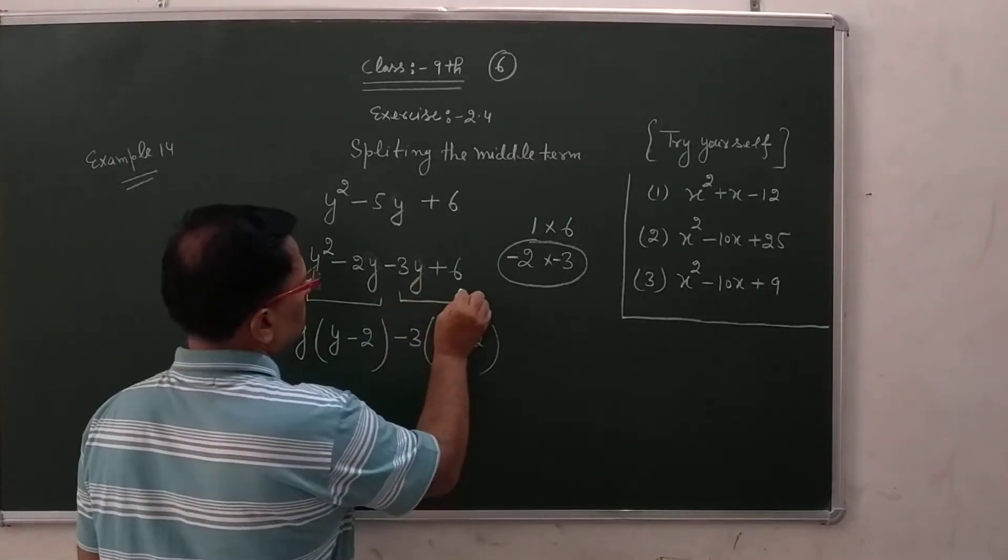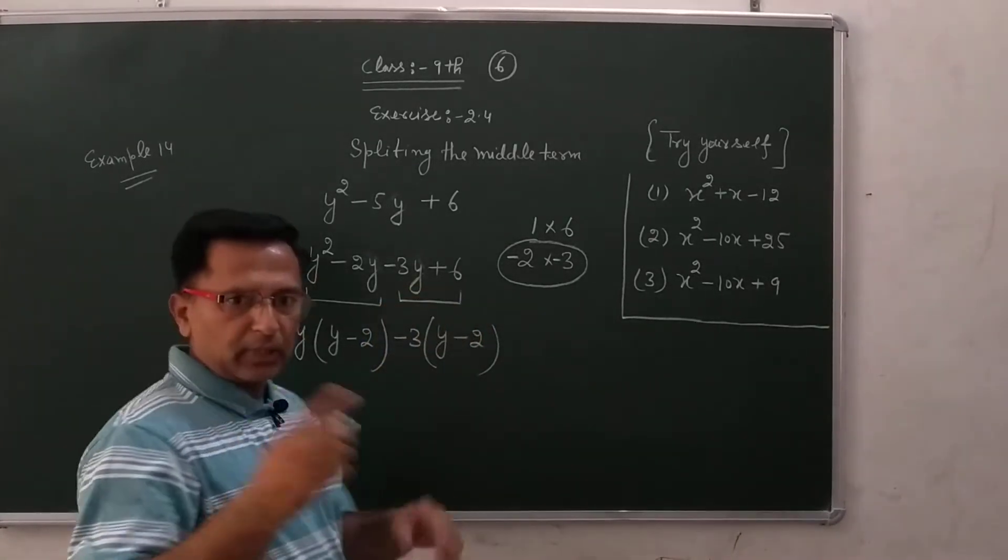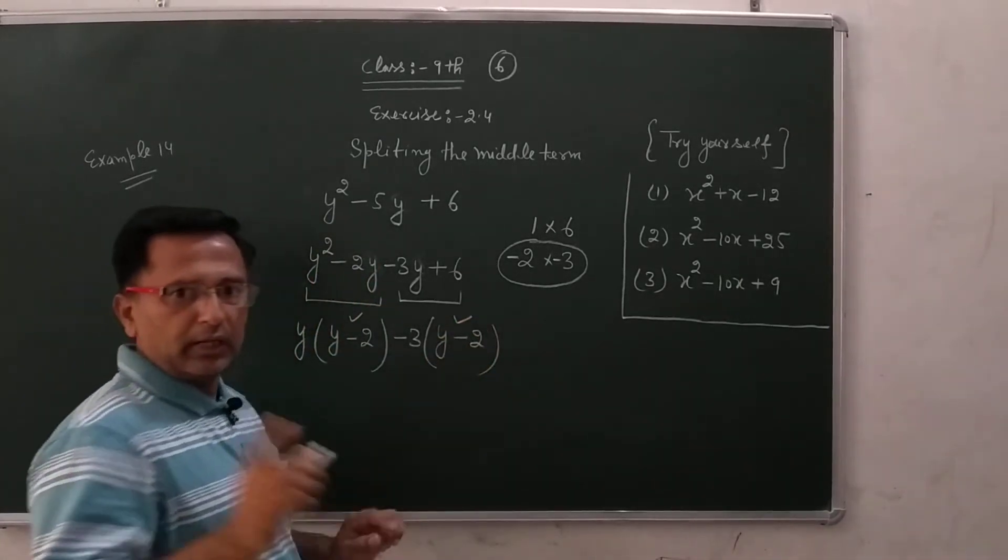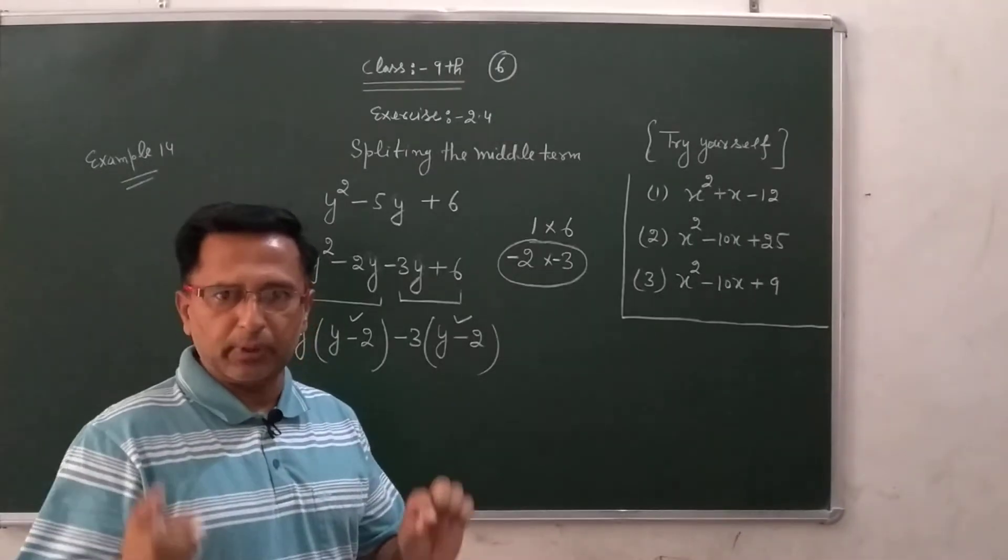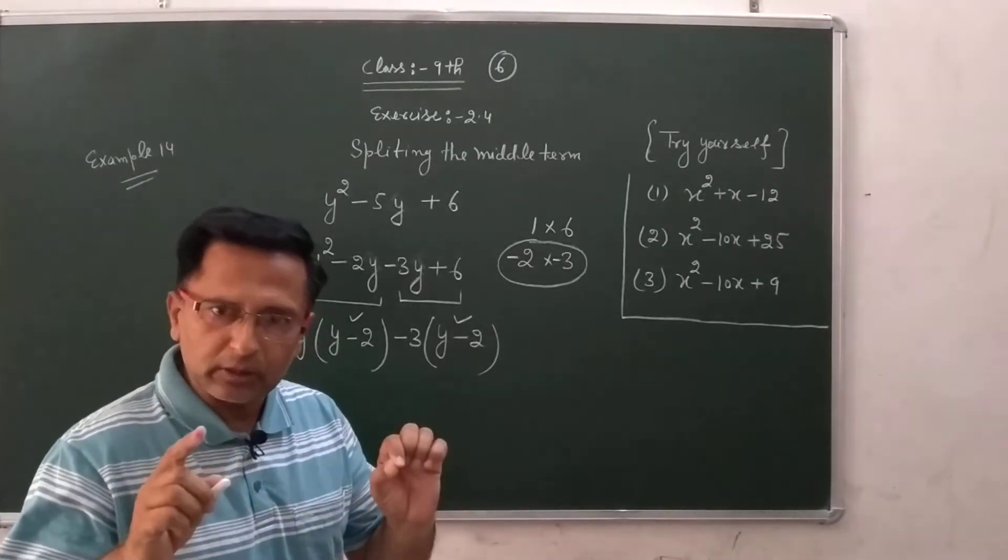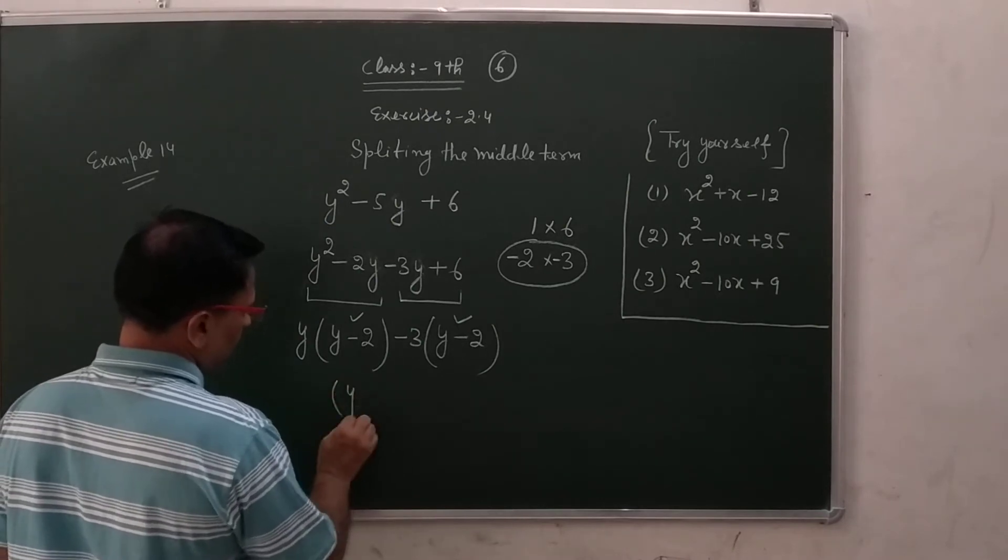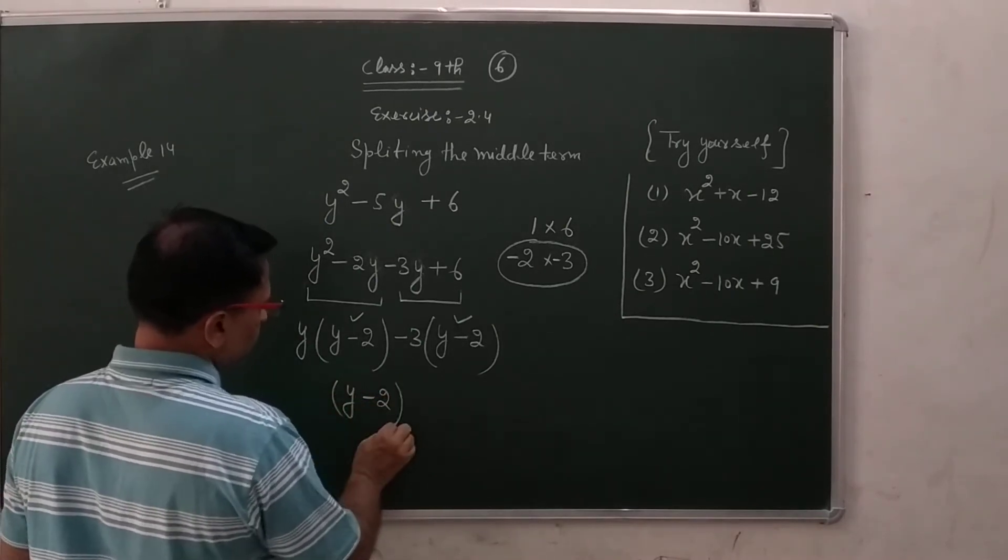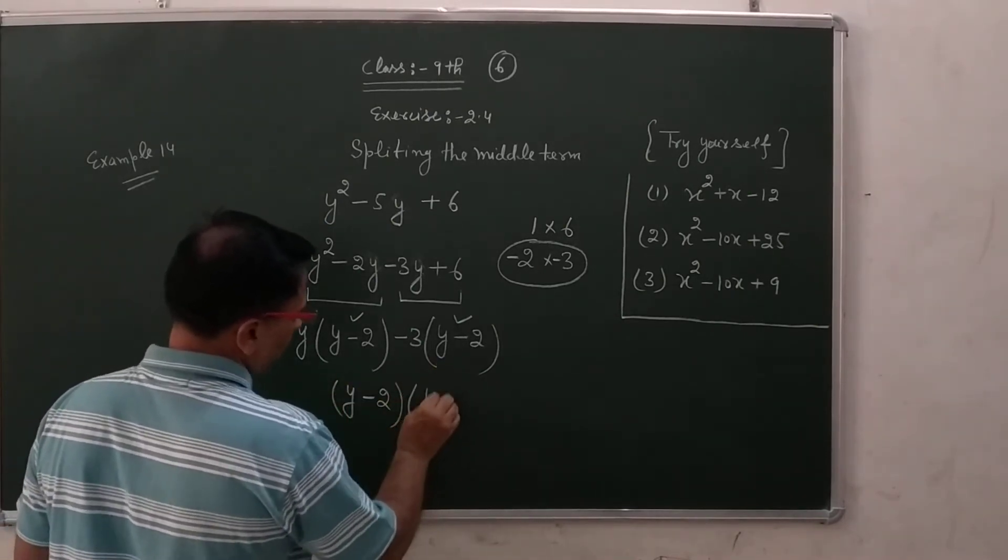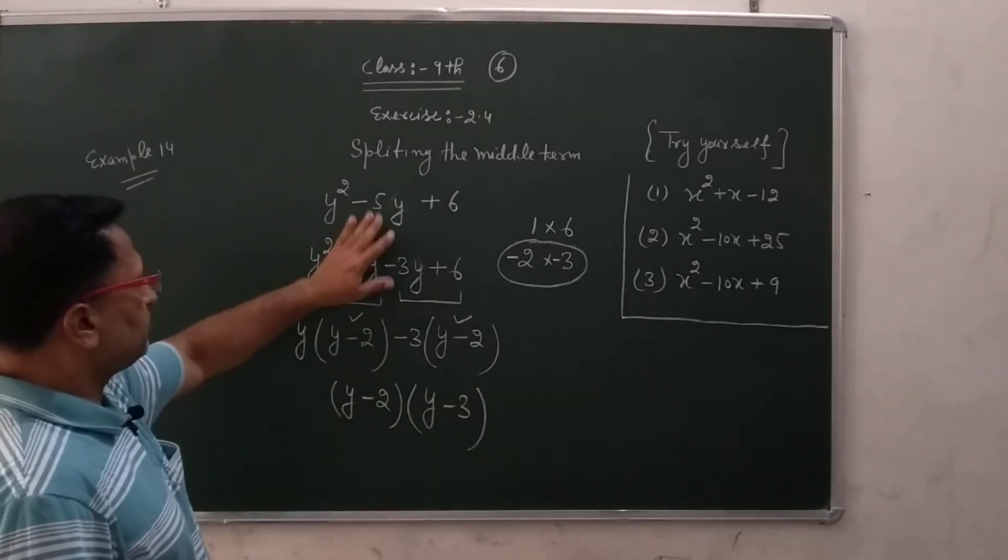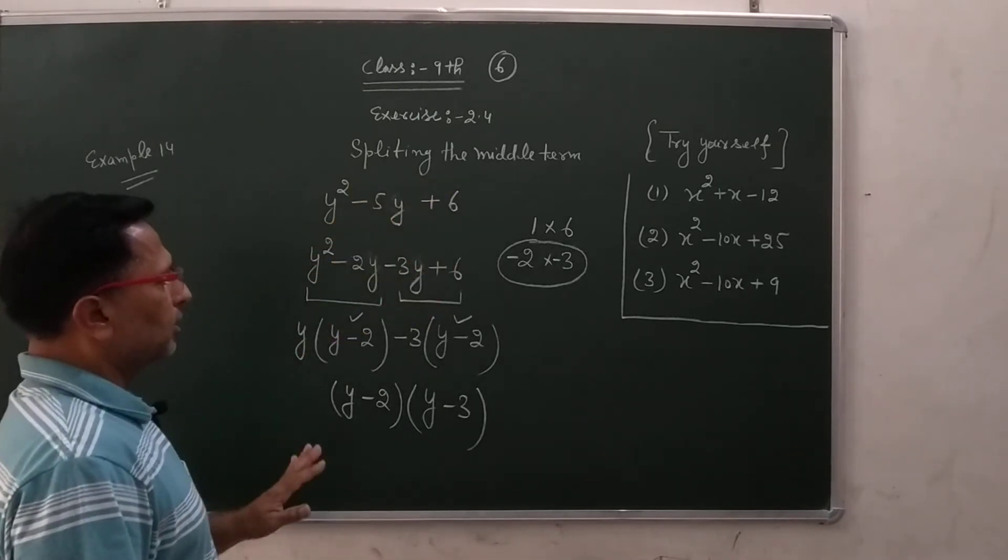So yeh is the. Maine pehle bataya hai yeh do factor aapke equal aayenge. Agar yeh equal nahi aaye to aapka sum wrong hai. Aapne kahi na kahi symbol mein galti ki hai. So yeh please, yeh par aapne poora dhyan rakhna hai symbolo ka. Y minus two phir common aaya. Or yeh kya hogaya y minus three. Is that. So these are the two factors of this by splitting the middle term.